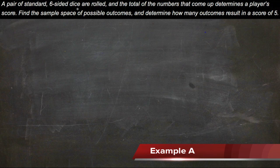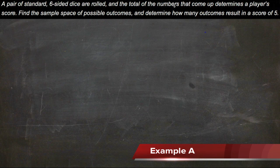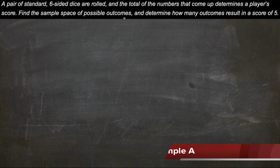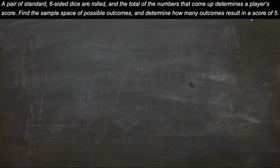It says a pair of standard six-sided dice are rolled and the total of the numbers that come up determines a player's score. What we need to do is find the sample space of possible outcomes and determine how many of those outcomes result in a score of five.